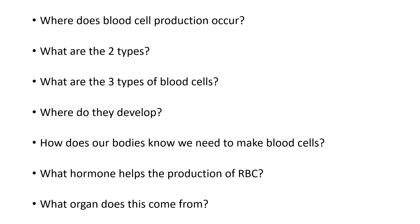Our bodies are smart. Due to the sensitivity of the bone marrow, when it notices we're lacking a red blood cell, white blood cell, or platelets, it's going to try to develop more. The hormone that helps the production of red blood cells is erythropoietin — a hormone originally released from the kidneys that helps stimulate the bone marrow.